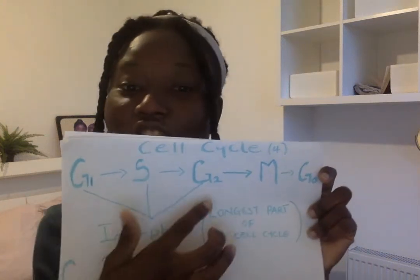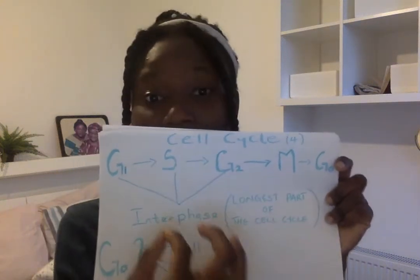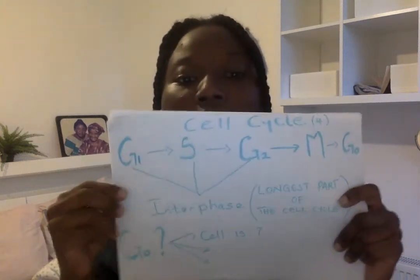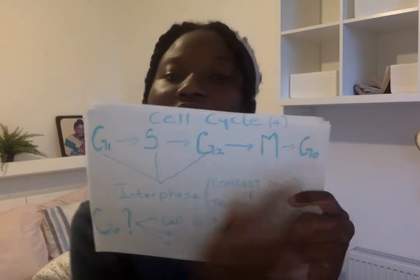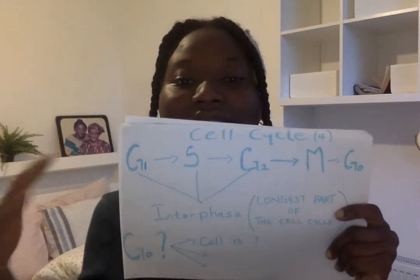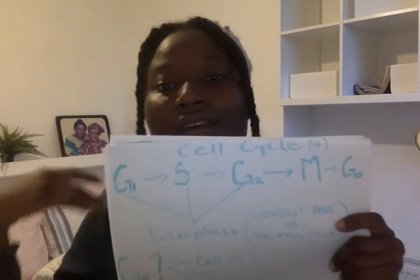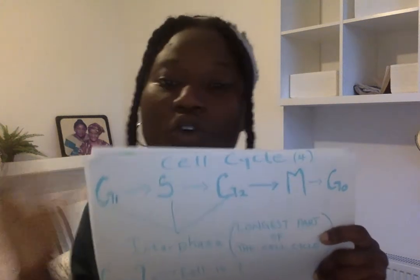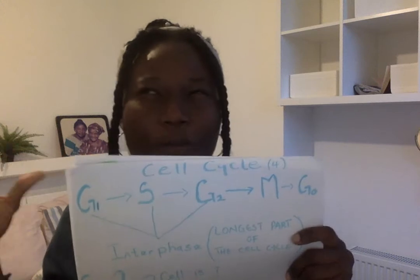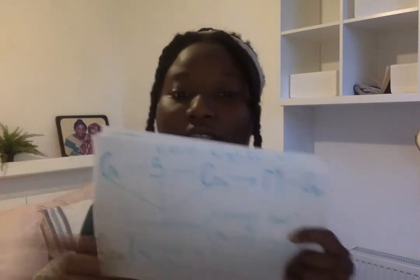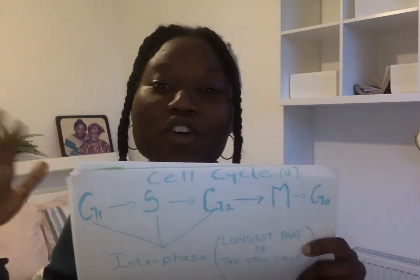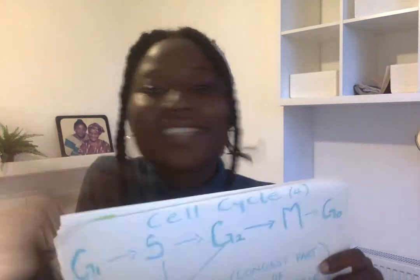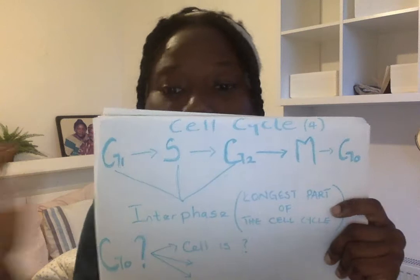So G1, S, and G2 are collectively known as interphase, and this is mitosis. Now the next thing: what is the G0 stage? The G0 stage is the stage whereby a cell is performing its normal function - it's not ready to replicate. Just keep in mind that the G0 stage is when your cell is on its own, not ready to replicate, not thinking about dividing, just carrying out its normal functions.